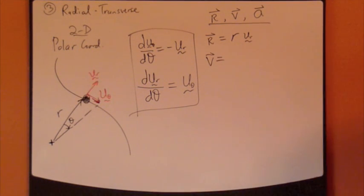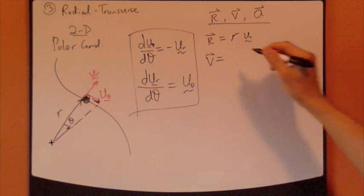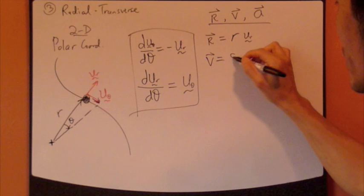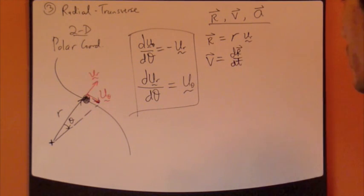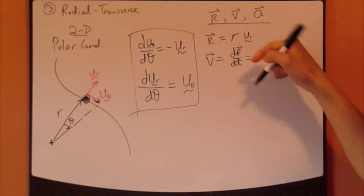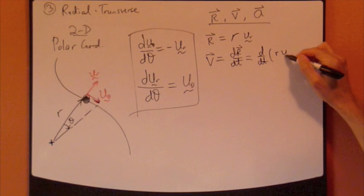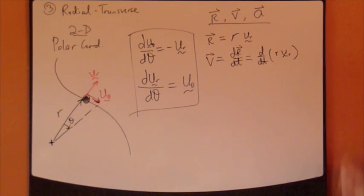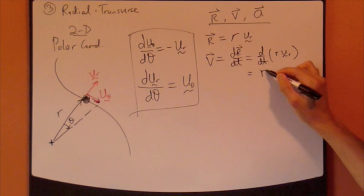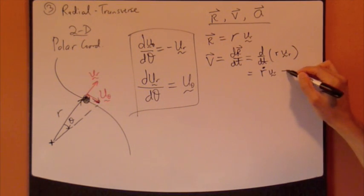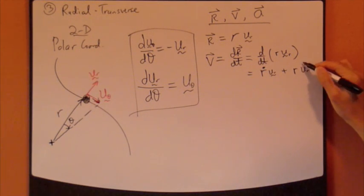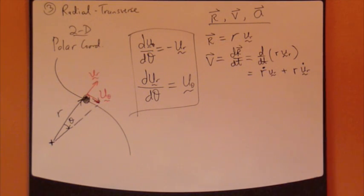Let's look at velocity. Velocity vector, by definition, is the time derivative of position vector dr/dt plus distance. So d/dt of r·u_r. You've got to use chain rule. So this is r_dot·u_r plus r·u_r_dot.